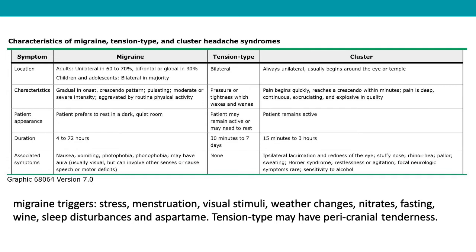Associated symptoms in cluster headache most commonly include ipsilateral lacrimation, redness of the eye, stuffy nose, rhinorrhea, pallor, sweating, or Horner syndrome, and restlessness or agitation. Focal neurological symptoms are rare. It's also important to be aware of migraine triggers including stress, menstruation, visual stimuli, temperature changes, nitrates, fasting, wine, sleep disturbances, and aspartame. Tension-type headaches may also have pericranial tenderness.